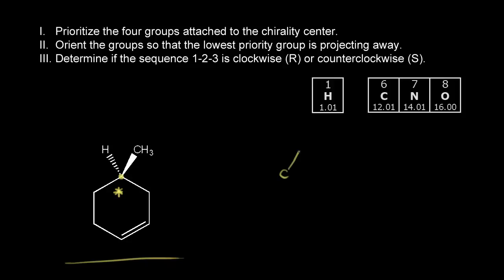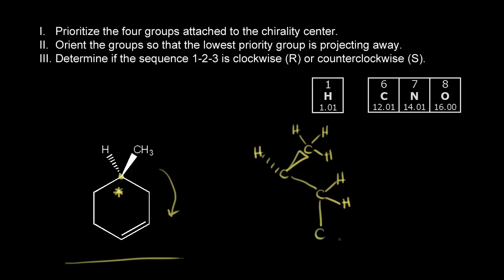So that's that carbon. We have a methyl group coming out at us, so I'm going to draw in the carbon with the hydrogens here. We have a hydrogen going away from us. Going to the right around the ring, we hit a CH2, so I'll draw in a carbon with two hydrogens. Then we hit a CH — this carbon bonded to a hydrogen. Notice that this carbon is double bonded to another carbon, and for the purposes of the RS system, we're going to pretend like this carbon is bonded to two different carbons, even though it's really one. That's how to handle a double bond.